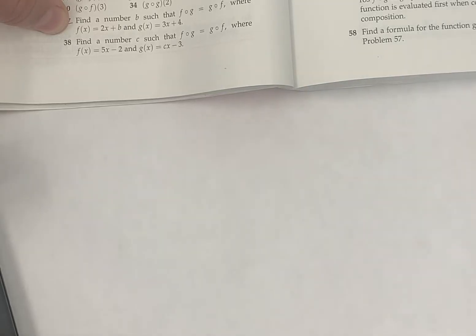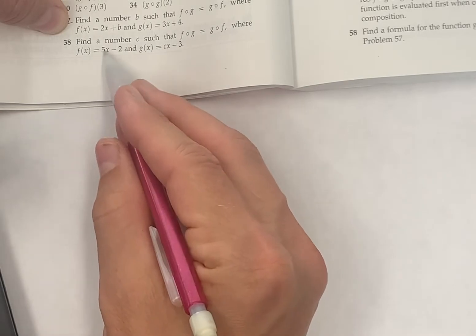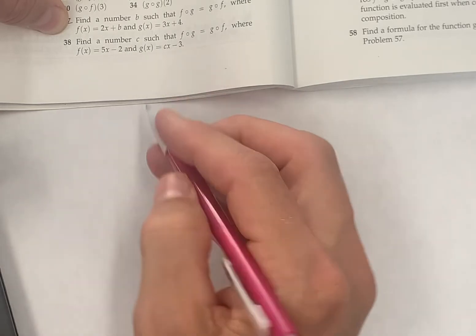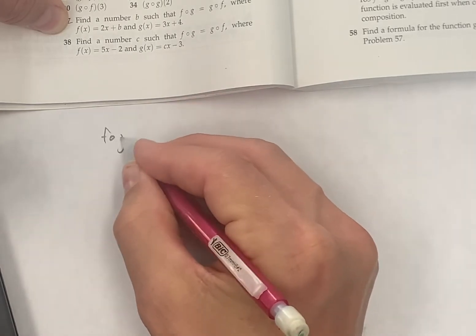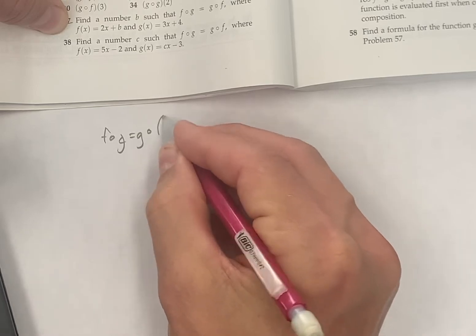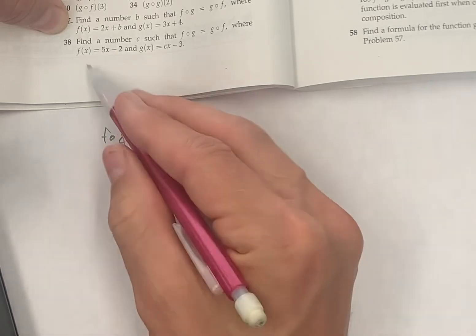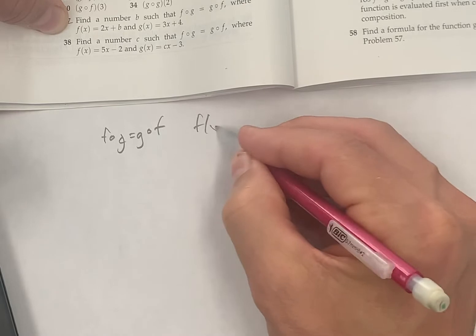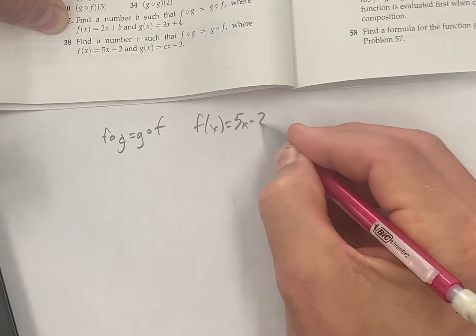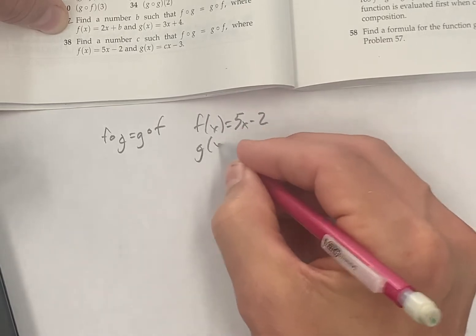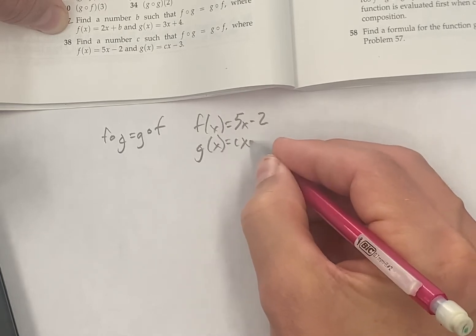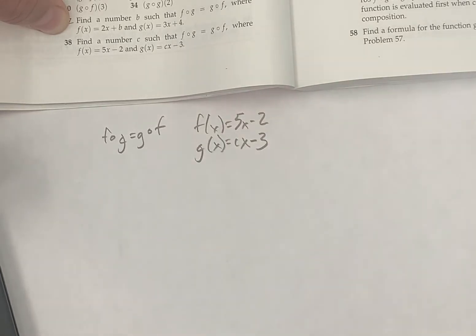Let me do number 38 on composition of functions. Find a number c so that f of g equals g of f, where f of x equals 5x minus 2 and g of x equals cx minus 3.